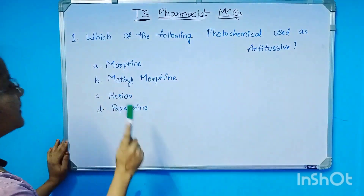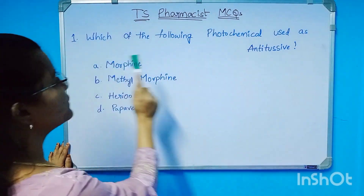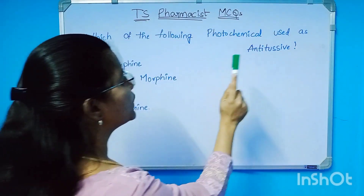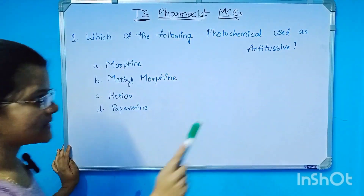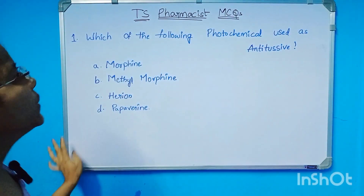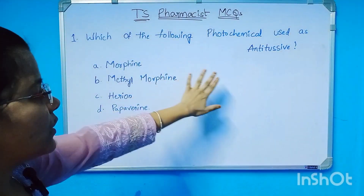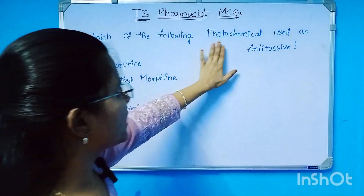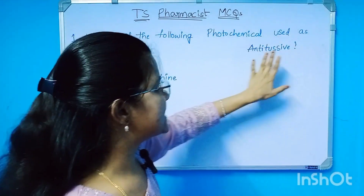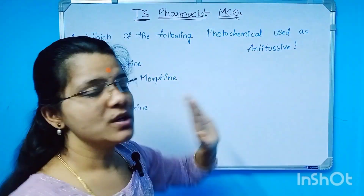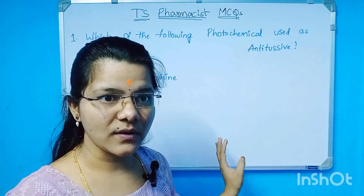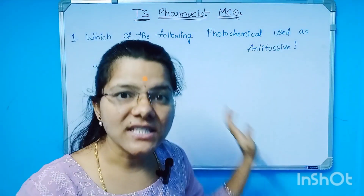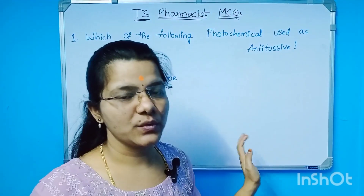The question is: which of the following phytochemicals is used as an antitussive? Here we need to apply our idea of antitussive classification.